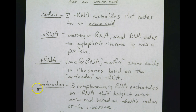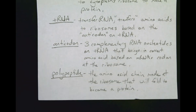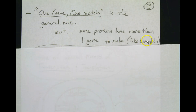Messenger RNA's codon will match up with the anticodon on tRNA — this will make more sense when we do practice drawings. A polypeptide is the amino acid chain made at the ribosome that will fold to become a protein. One last note for this page: one gene, one protein is the general rule, but some proteins have more than one gene. For example, hemoglobin needs four genes to make the four subunits that make up the hemoglobin protein.